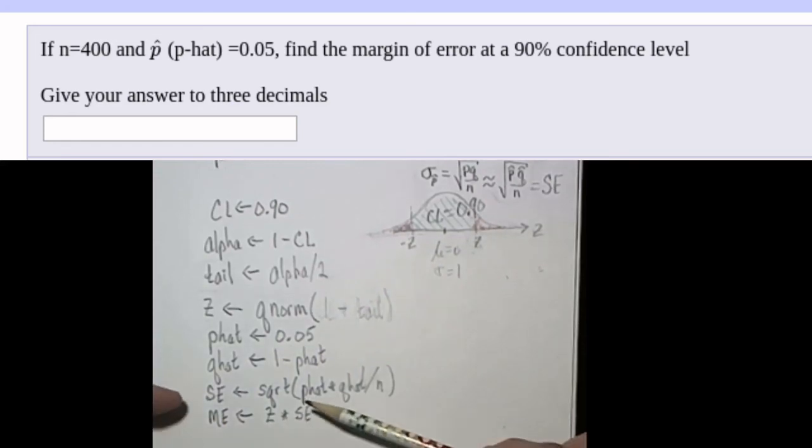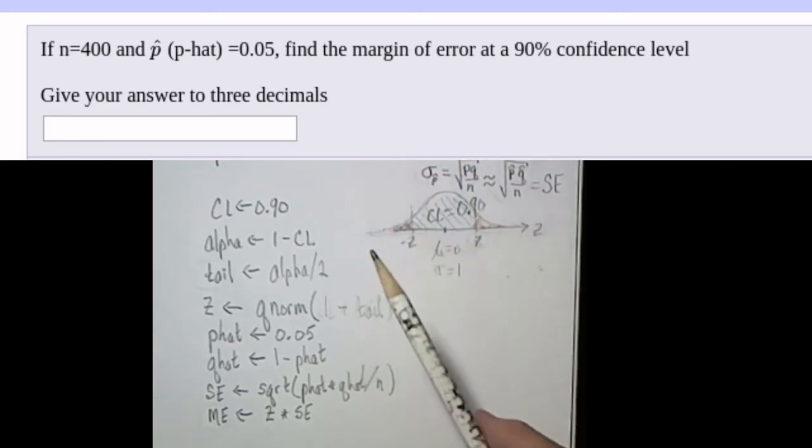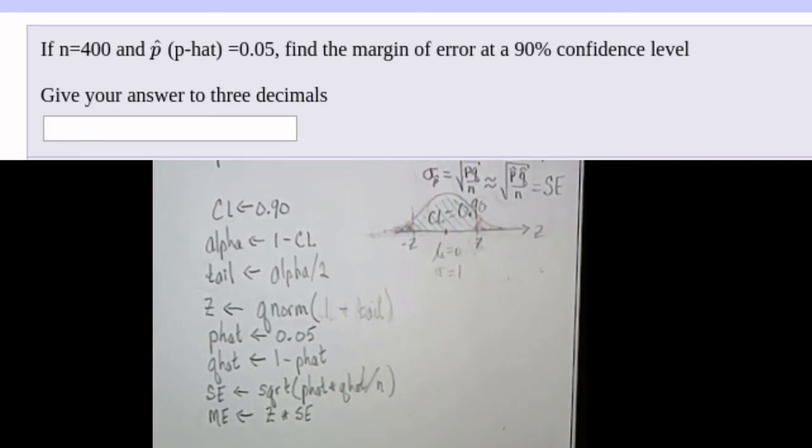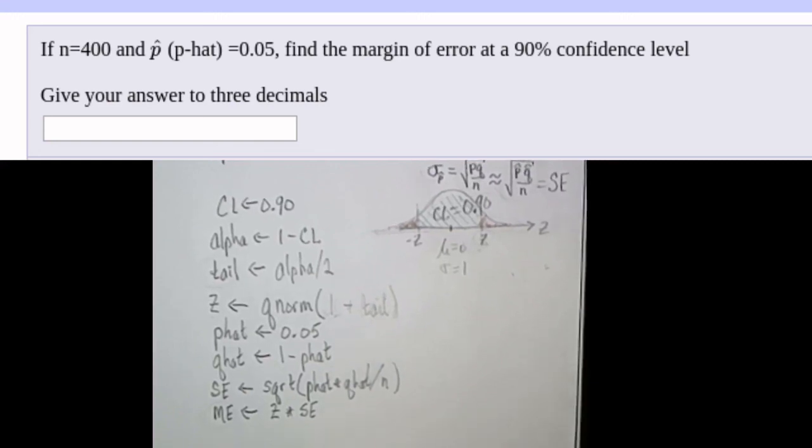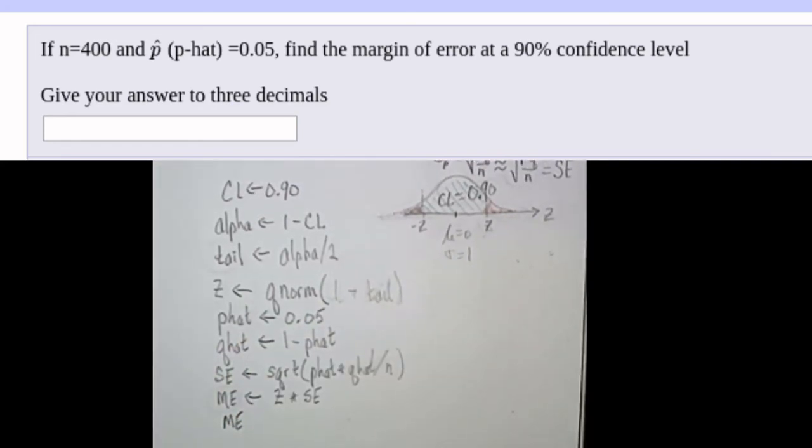Okay, now we're only partway through with the problem, but that's all that they asked for. So I'd probably ask R to print out ME and then report that answer in the problem. The issue here is that once we've found that margin of error, we would subtract that margin of error from P hat, we'd add that margin of error to P hat, and that would give us the confidence interval that would be a 90% confidence interval. In this problem, all that they're asking for is that margin of error. We've found that margin of error now, and so that's what we need to do is ask R to print that out.